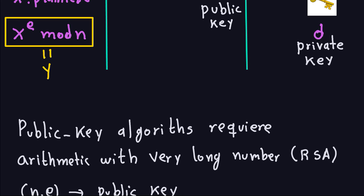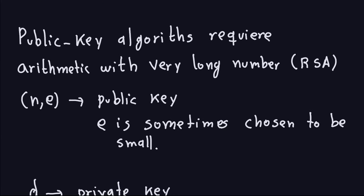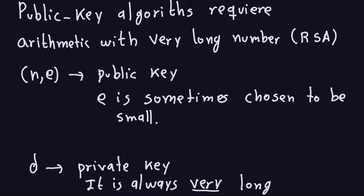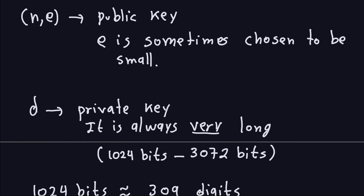It needs to be manageable in a time that computers can handle without delaying the communication. In RSA, the public key is (n, e), where n is the modulus and e is the public exponent — this is the key that everyone knows. Usually to compute fast, e is kept small. However, d, the private key, should always be very long, because choosing something small makes it easily crackable and not suitable for RSA encryption. In reality, d is usually between 1024 bits and 3072 bits, so it's quite a long number.